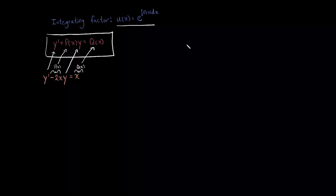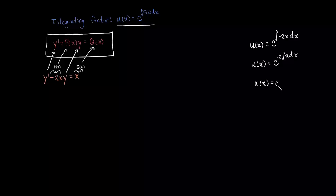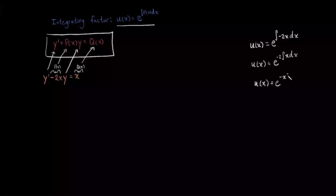The integrating factor is μ(x) = e raised to the integral of p(x) dx. In this case p(x) is -2x, so we have μ(x) = e^(∫-2x dx). Keeping on, that gives us e^(-2 · x²/2), and simplifying we get e^(-x²). So our integrating factor is e^(-x²).